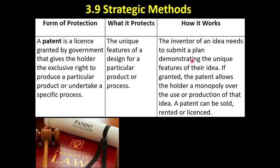So how does it actually work? The inventor of an idea needs to submit a plan to the UK IPO — the UK Intellectual Property Office — and they need to demonstrate the unique features of their idea. They need to clearly hand in a plan that shows what is unique about their design and what makes their idea special. The UK Intellectual Property Office will then consider their proposal, and if the patent is granted, it allows the holder a monopoly over the use or production of that idea. The patent lasts for 20 years.